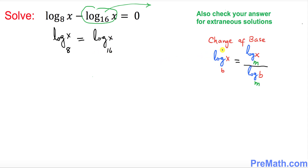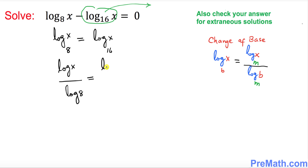The next step is to use the change of base formula. The left hand side can be written as log of x divided by log of 8, where by default the base is 10 since this is a common log. On the right hand side I do the same thing: log of x divided by log of 16.